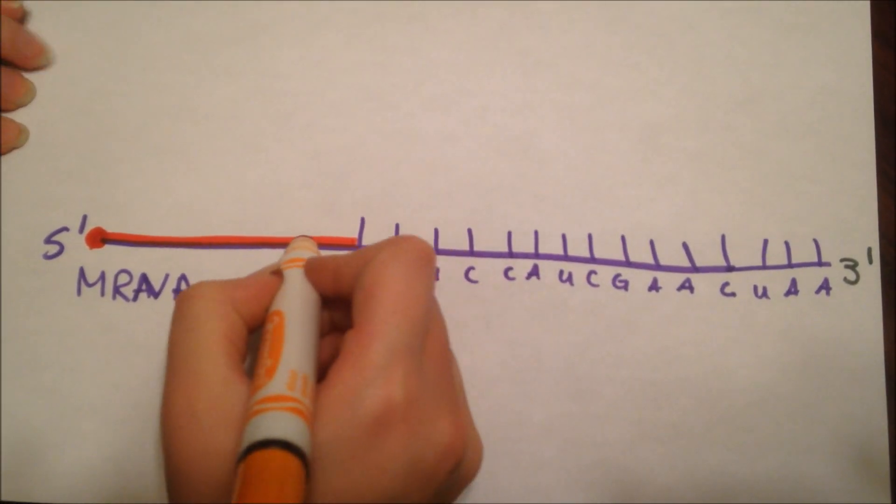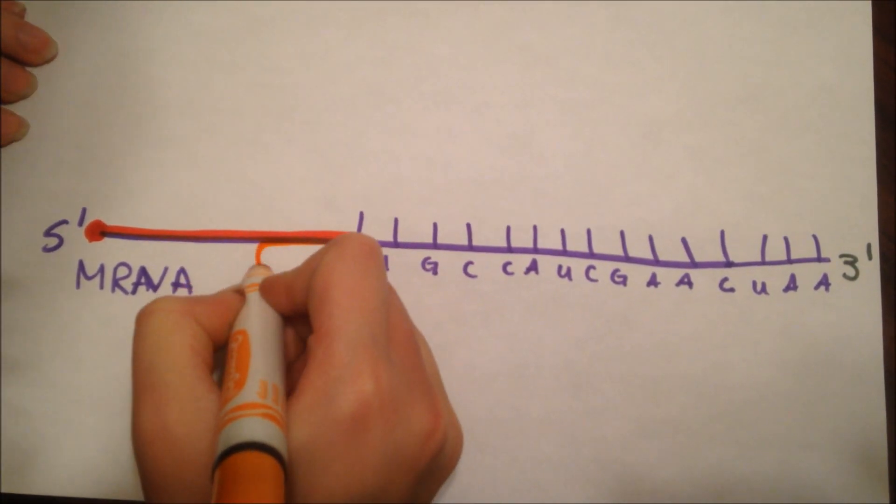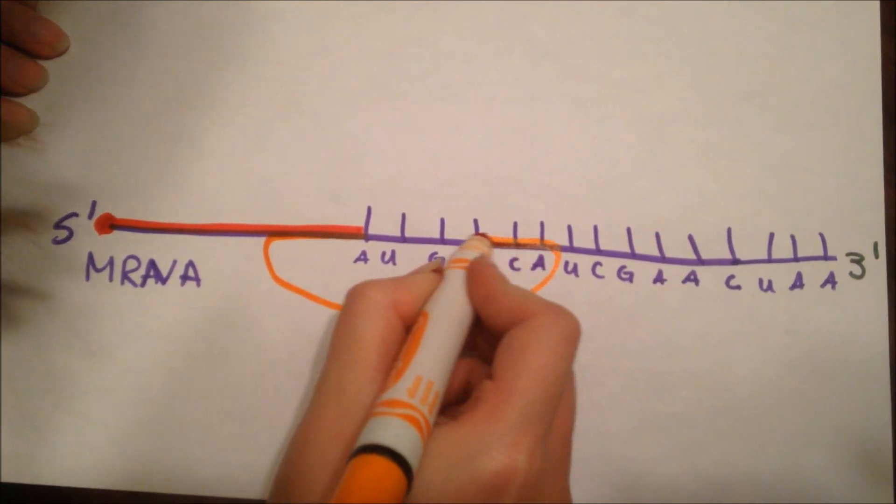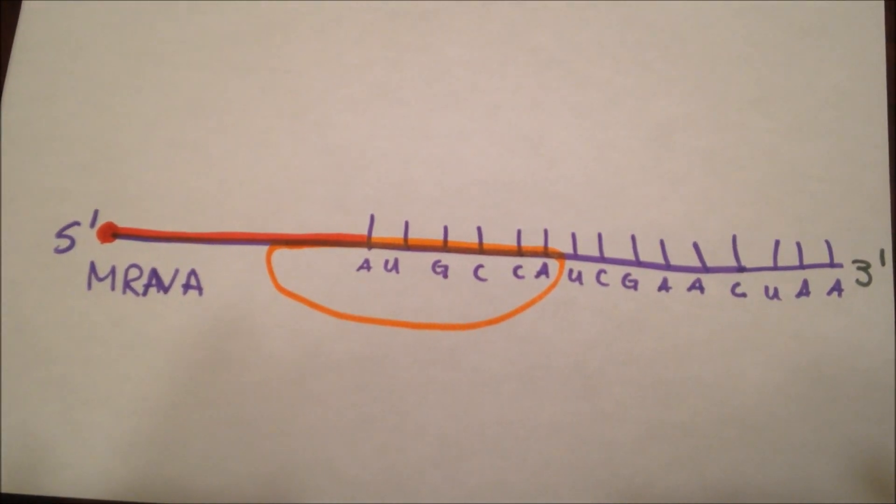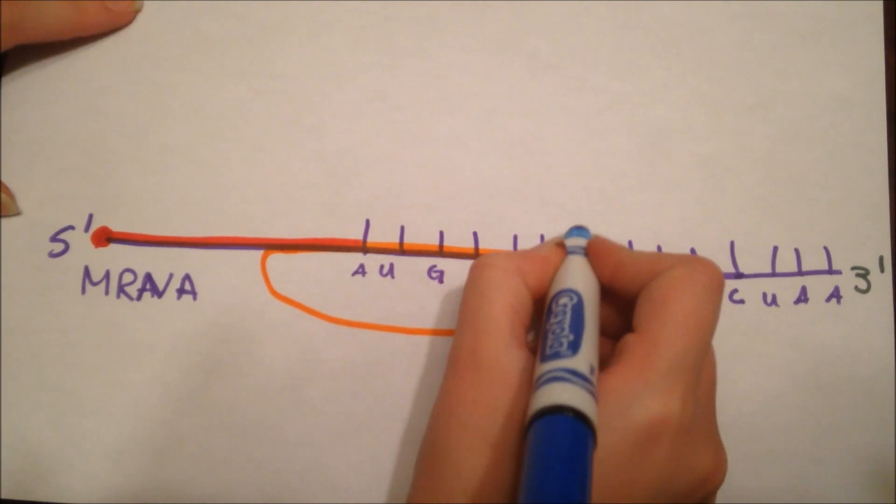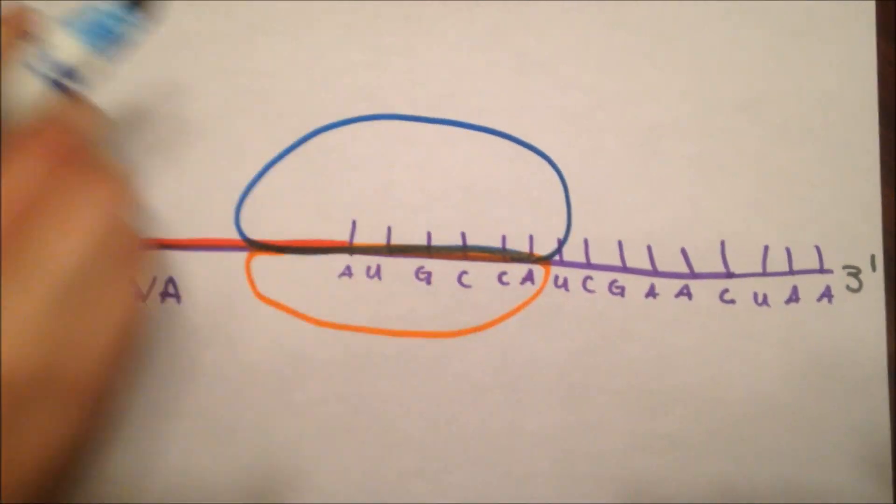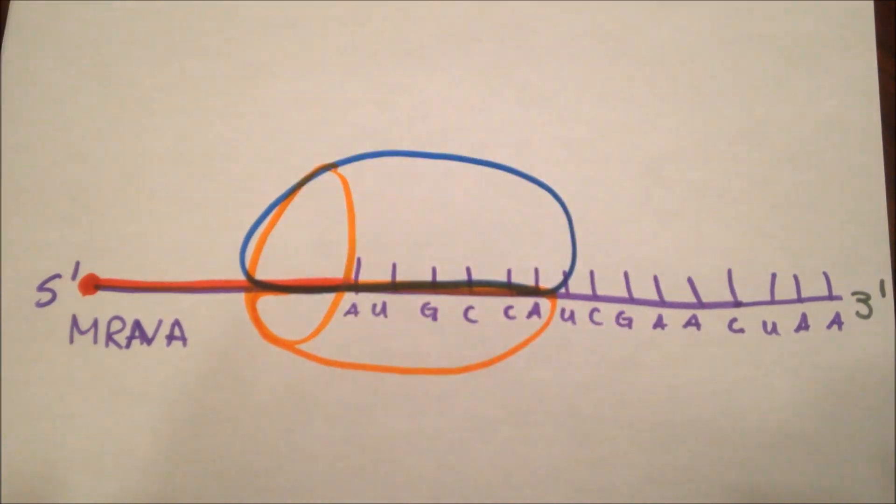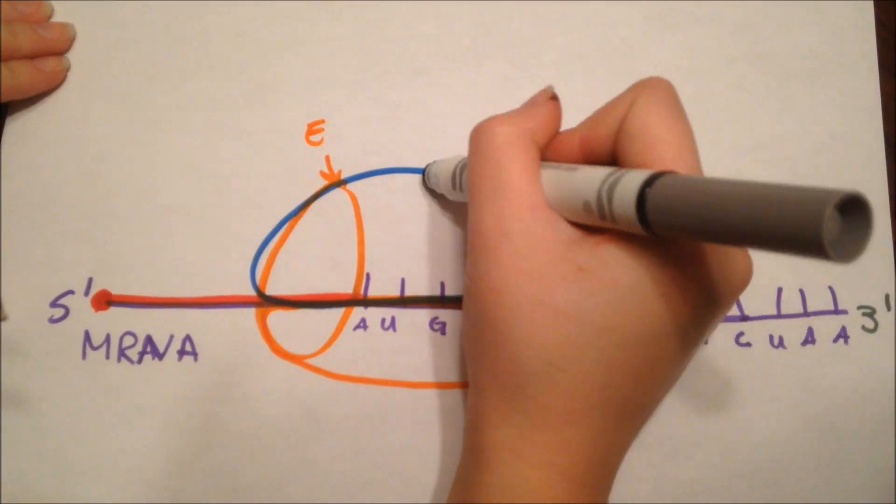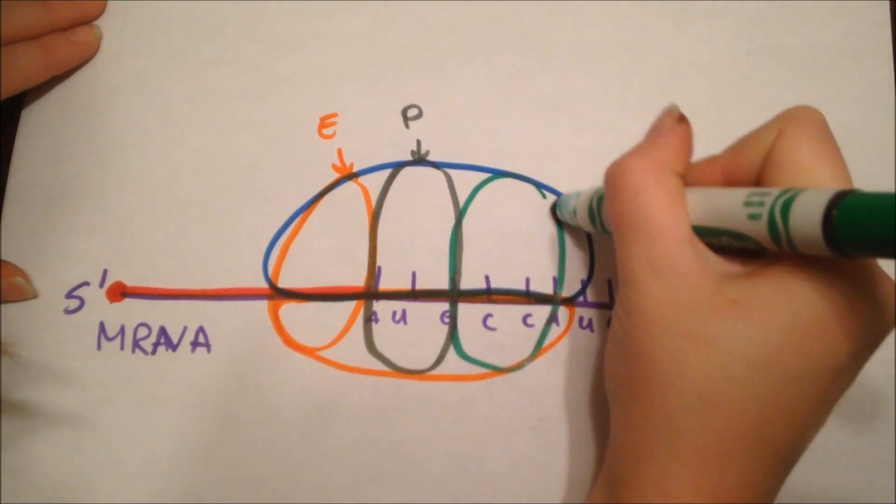In eukaryotic cells, ribosomes are abundant. The smaller subunit of the ribosome joins to the mRNA strand. Then, the bigger subunit comes. The ribosome, once together, has three parts to it. The e-site, the p-site, and the a-site.